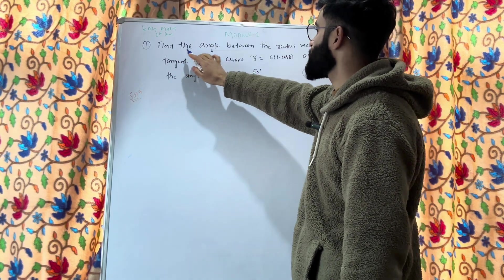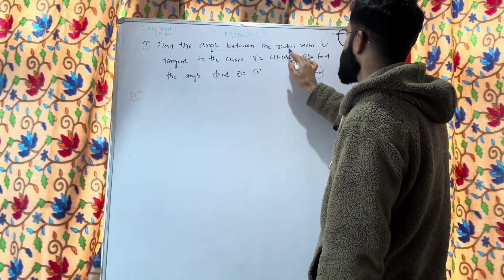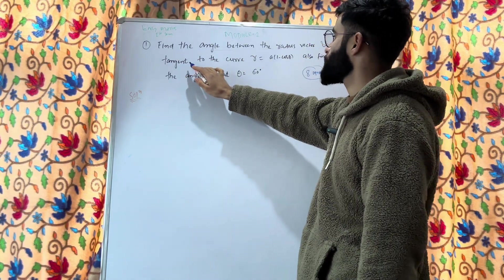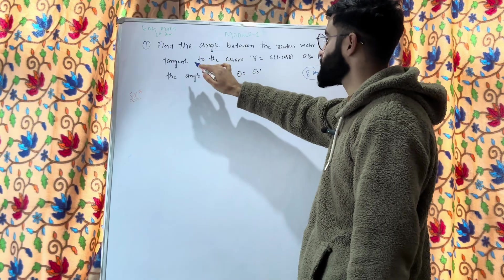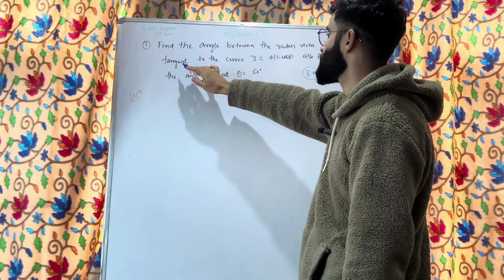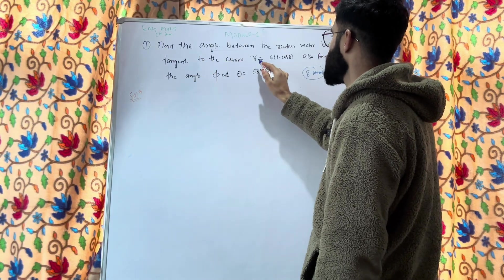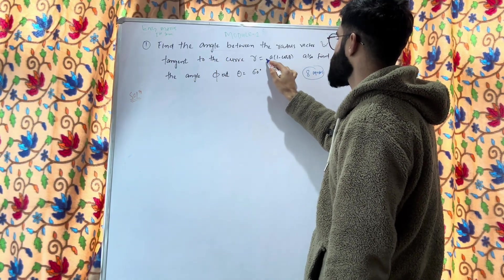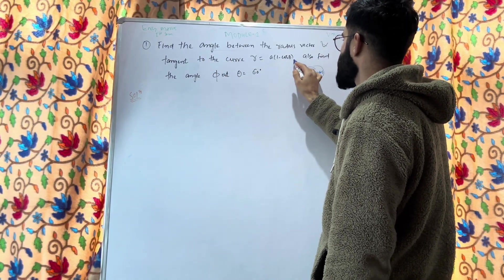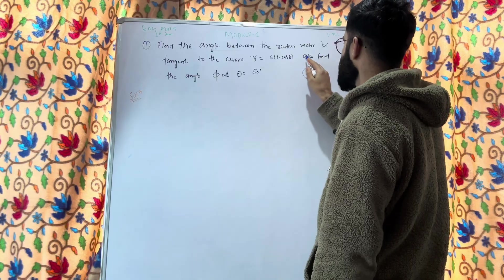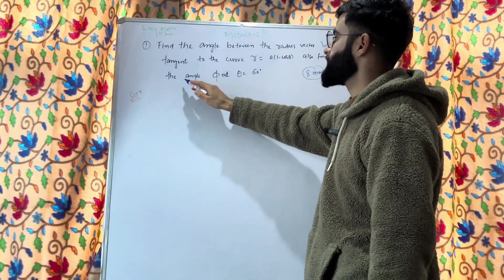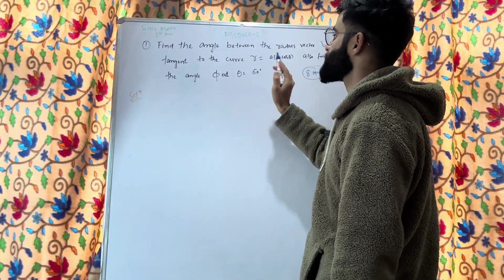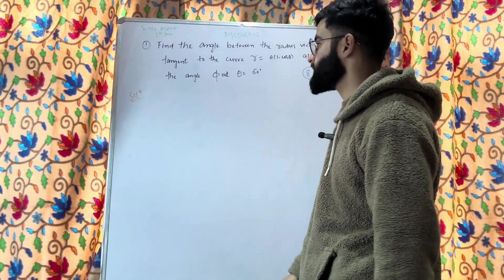We have to find the angle between the radius vector and the tangent to the curve. The curve is given as r = a(1 − cosθ). We also need to find the angle φ at θ = 60°.